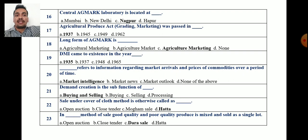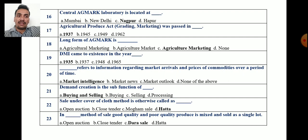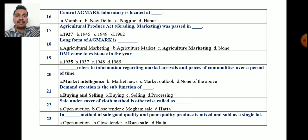Question 21: Demand creation is a sub-function of — buying and selling only, buying only, selling, or processing? The correct answer is that demand creation is a sub-function of buying and selling, because it is through buying and selling activity that demand is created.